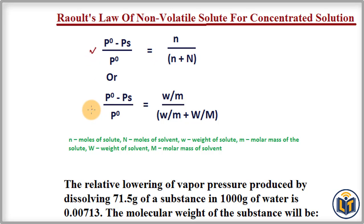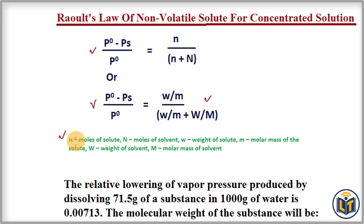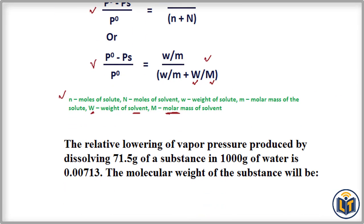This formula can also be written in a simplified form: (P° - Ps) / P° equals the mole fraction of solute. If the mass of solute and solvent is given, we apply this formula where small w is the mass of solute, small m is the molar mass of solute, small n is moles of solute, capital N is moles of solvent, capital W is mass of solvent, and capital M is molar mass of solvent.